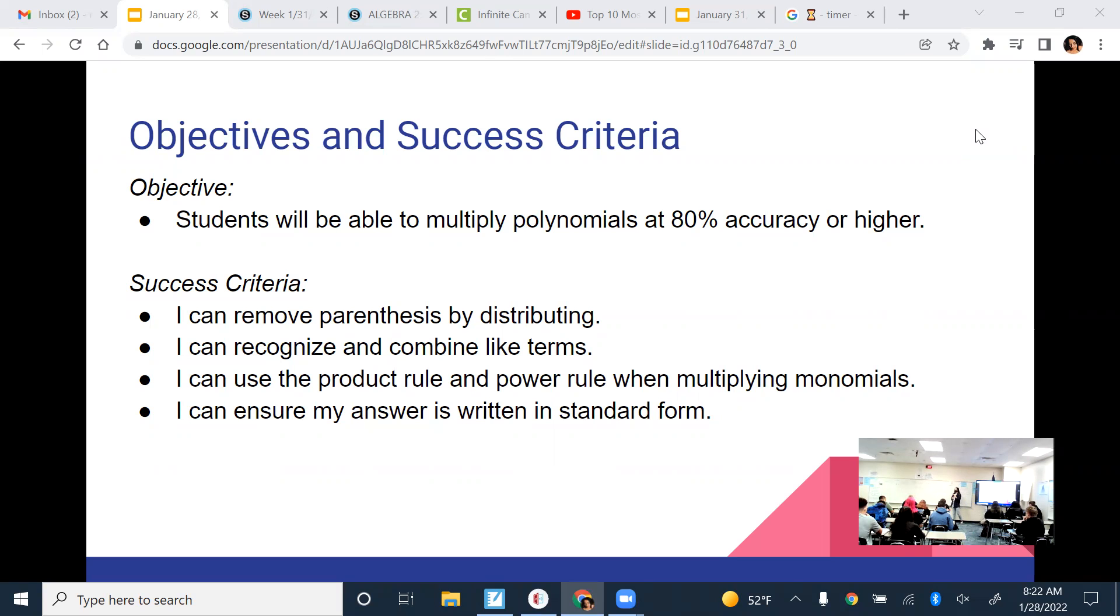So what's a monomial? One term. That could be a variable, it could be a constant, it could be a number and a variable put together. So basically just one term times a polynomial.